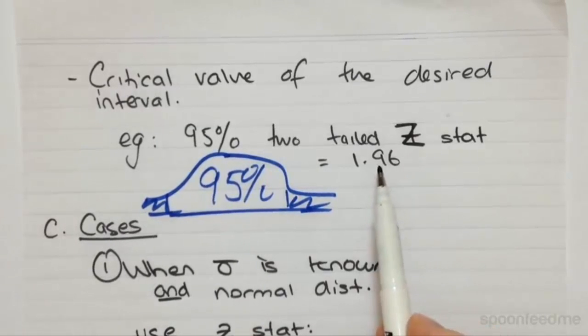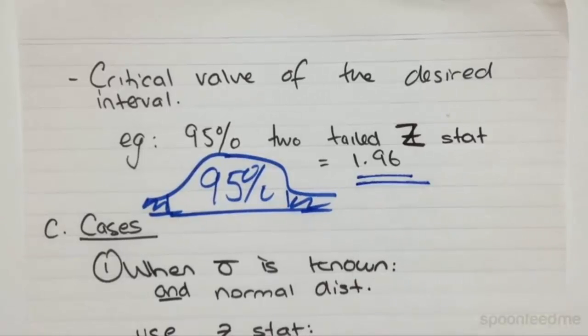And in that case, the Z statistic that bounds 95% of the potential values for the population mean is 1.96.